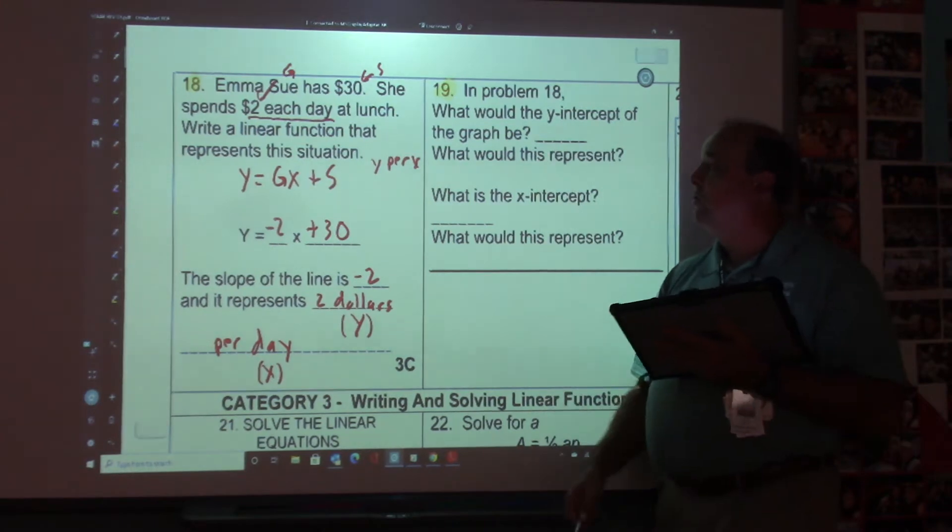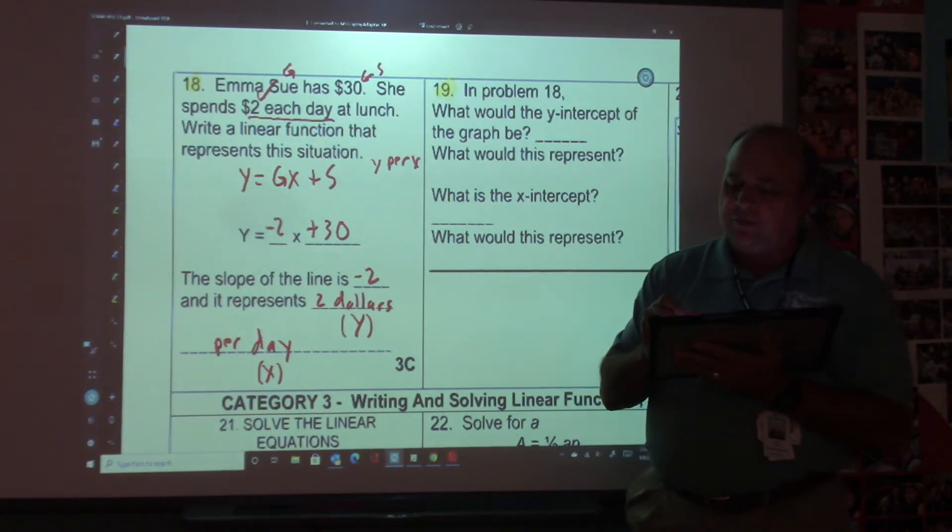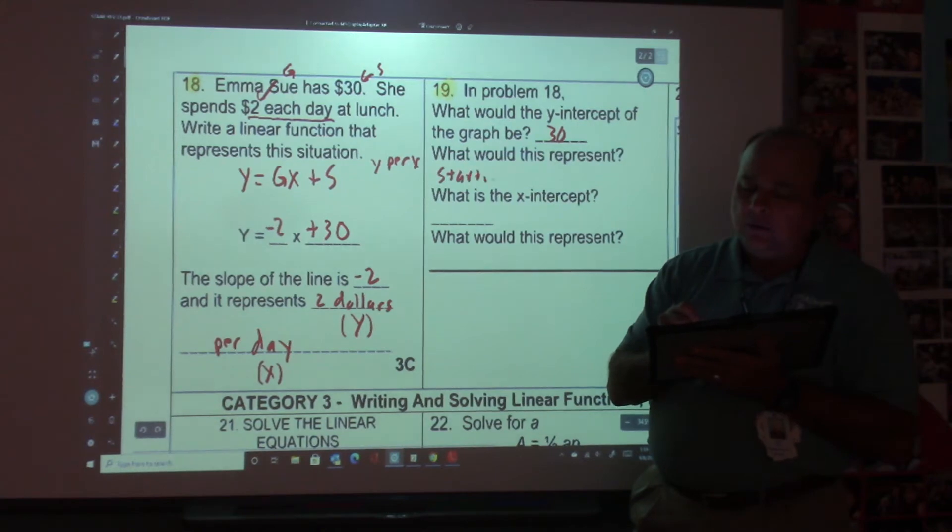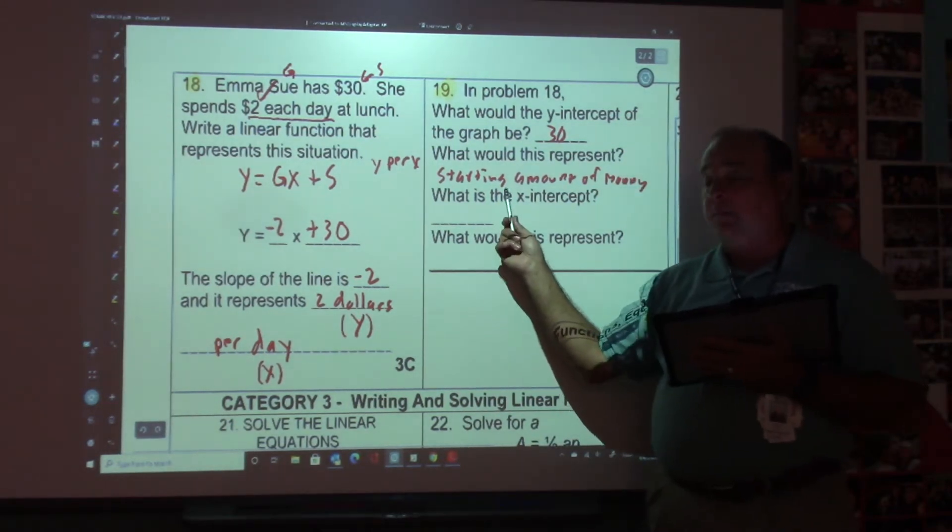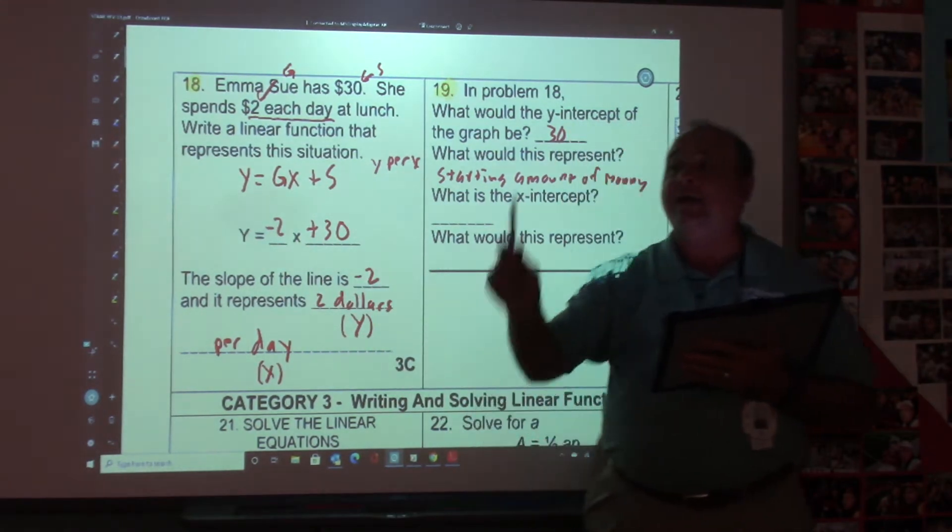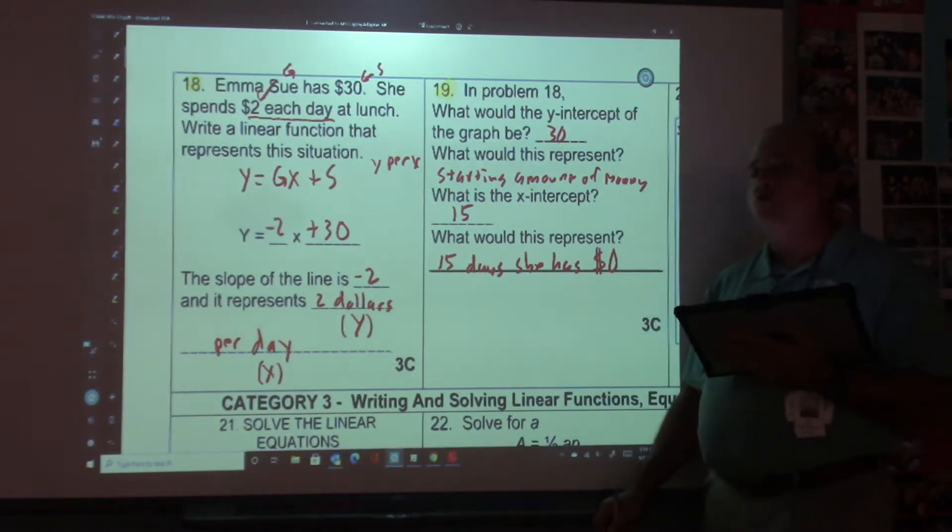What would the Y intercept of this graph be? The Y intercept is going to be 30. And remember, the 30 is your starting amount. It's the starting amount of money. Now then, what would the X intercept be? When would she run out of money? How many times could she spend $2 with $30? Excellent. 15, right? So the X intercept is 15. At 15 days, she has $0.